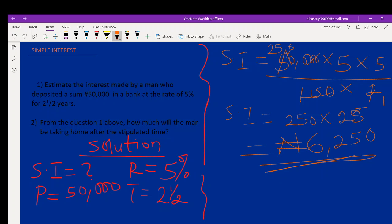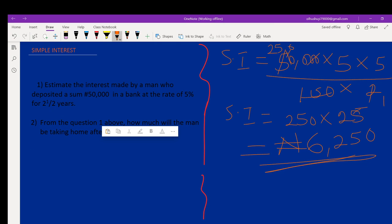The next question says: from question one above, how much will the man be taken home after the stipulated time? The amount to be taken home—the formula for amount is always simple interest plus the principal. What is the simple interest? Simple interest is 6,250.